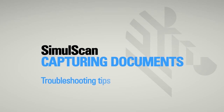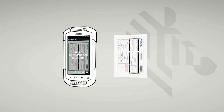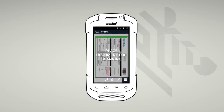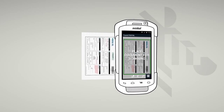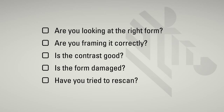It's that easy. Here are some troubleshooting tips. SimulScan will always try to identify, then process your document. If, for some reason, you don't see the green frame or you're unhappy with the results of your scan, please check the following: Are you looking at the right form? Are you framing it correctly? Is the contrast good? Is the form damaged? Have you tried to rescan? If you are still having problems, please contact your organization's IT support.